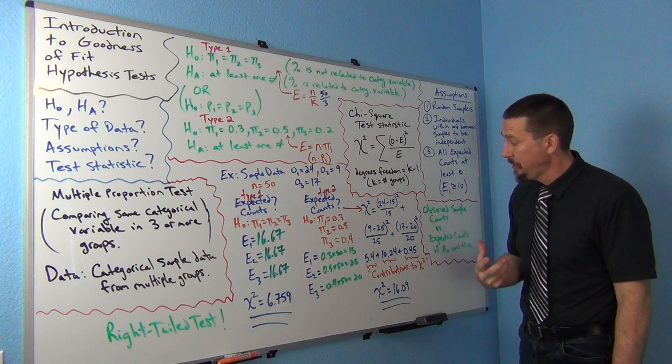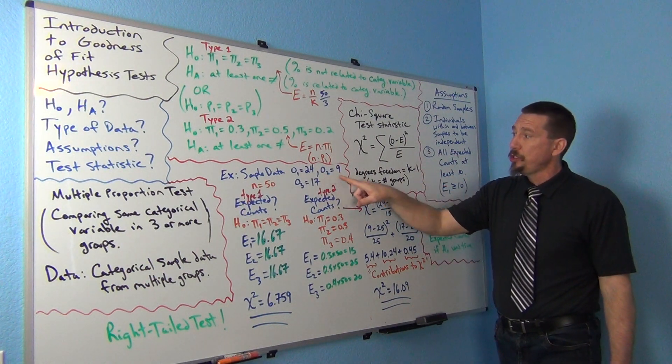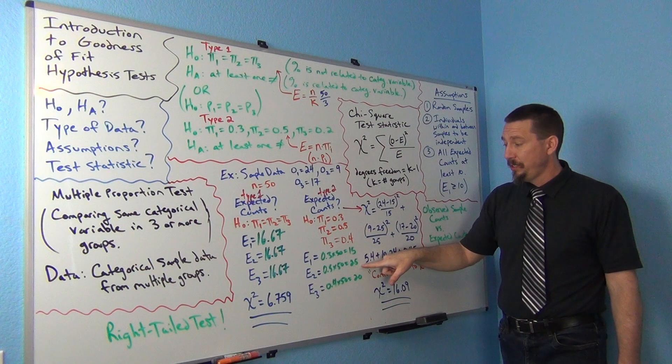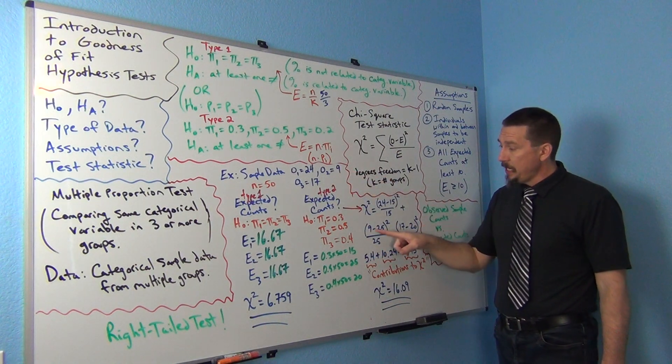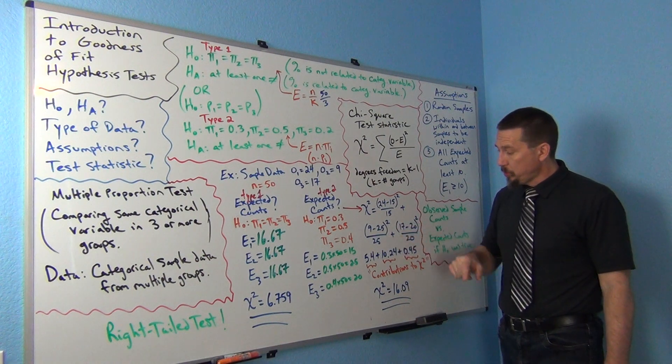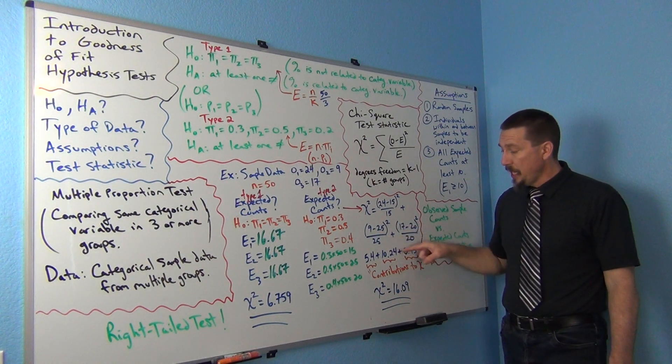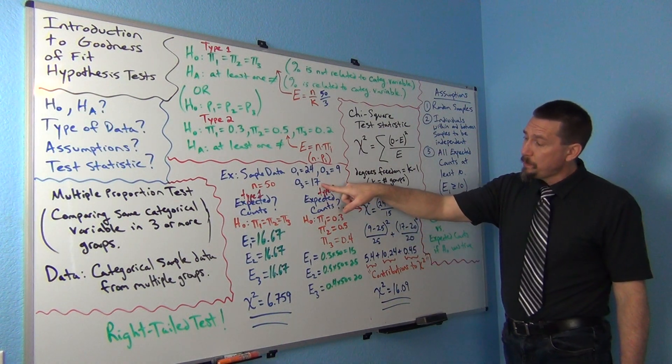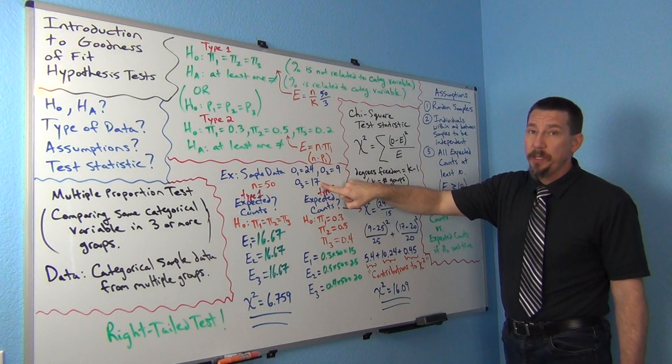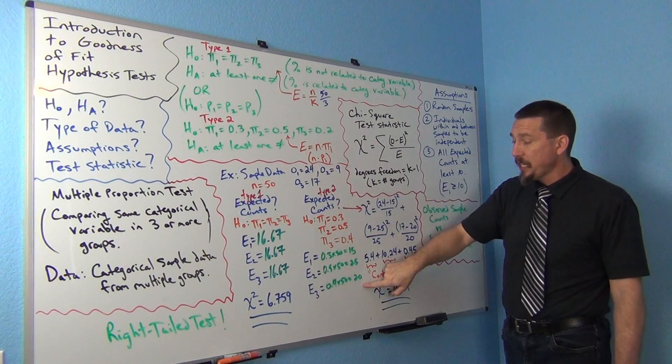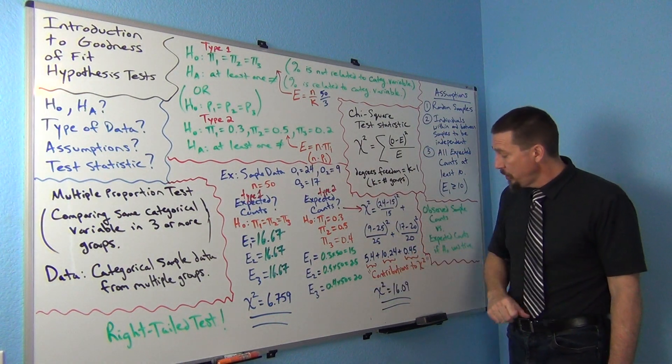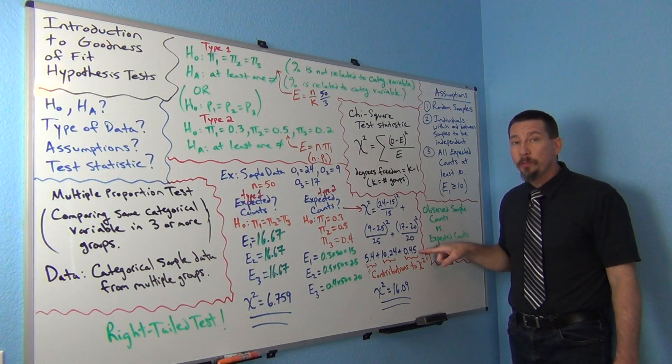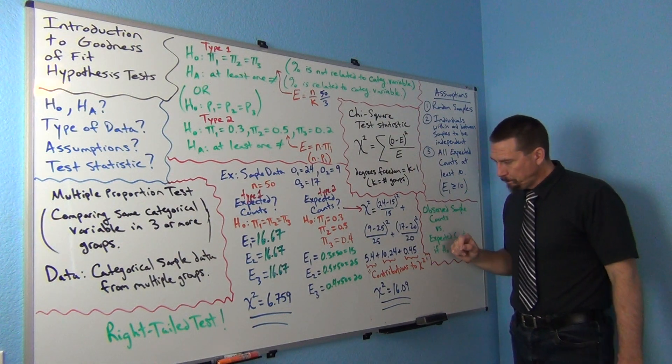Now what about group two? Well group two, we observed nine people that had that characteristic, we expected 25. So quite a big difference there. Notice again nine minus 25 squared divided by 25 gives us 10.24. That's the contribution to chi-square from group two. And then the third group, we observed 17 people in the sample data that had the characteristic, we expected 20 if the null hypothesis was true. So now we got 17 minus 20 squared divided by 20 and we get 0.45. That's its contribution.